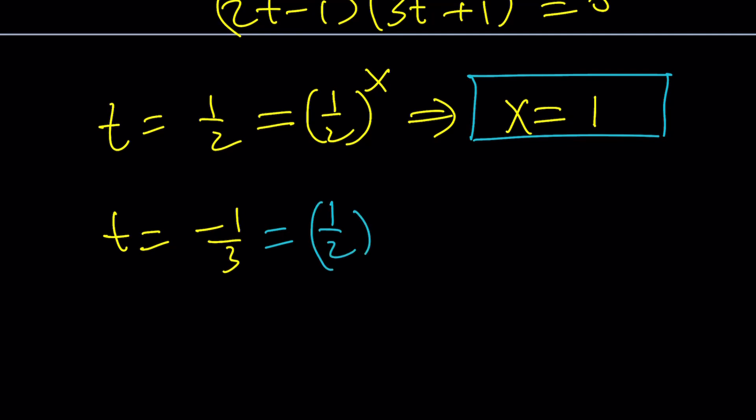Let's look at the other one. We don't get a real solution. Why? Because 1 half to the x cannot be negative - positive base. But if x is complex, everything is possible. So let's see how we can find an equation like this.